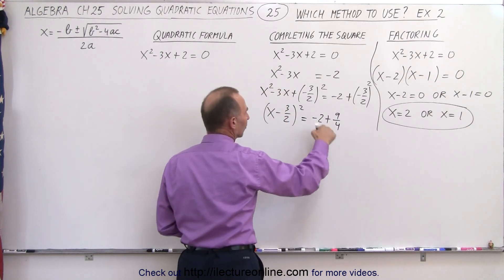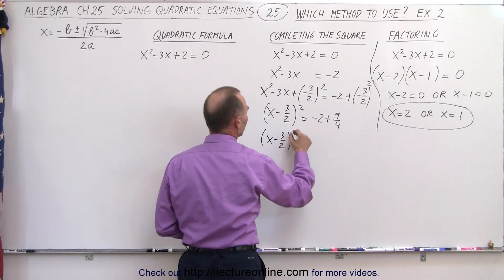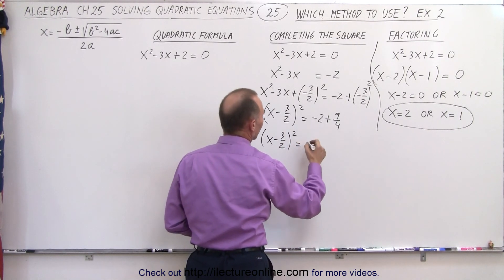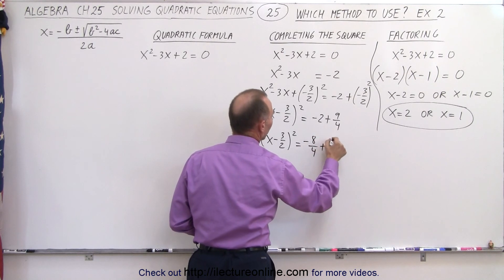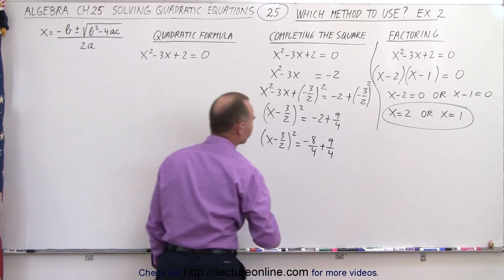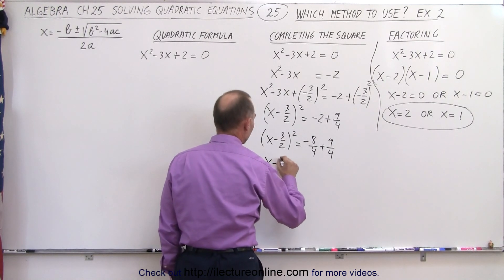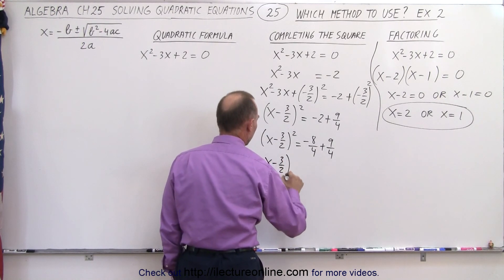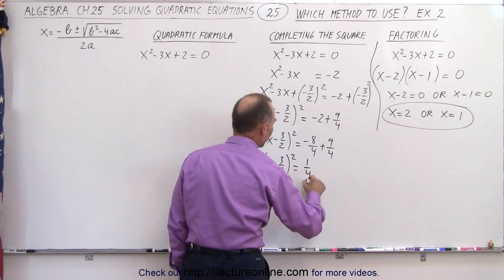Now of course I have to add this together. So we end up with X minus 3 over 2 quantity squared is equal to writing this over a common denominator of 4, that would be minus 8 over 4 plus 9 over 4. So notice that would be X minus 3 over 2 quantity squared is equal to minus 8 plus 9, which is 1 over 4.